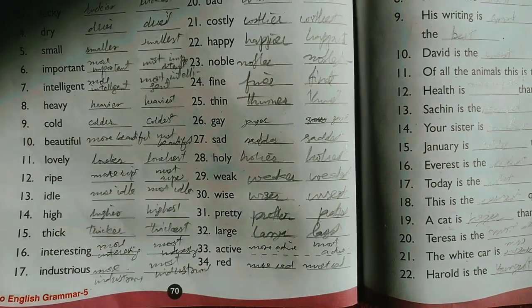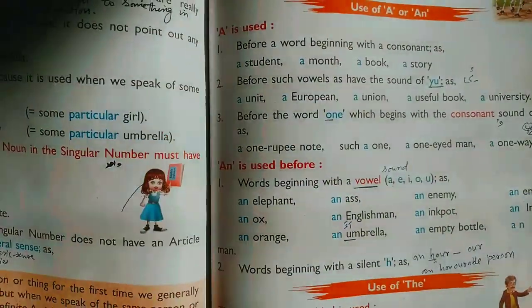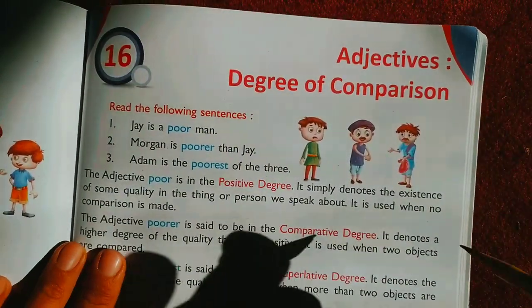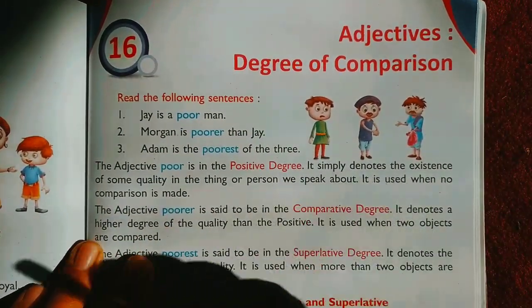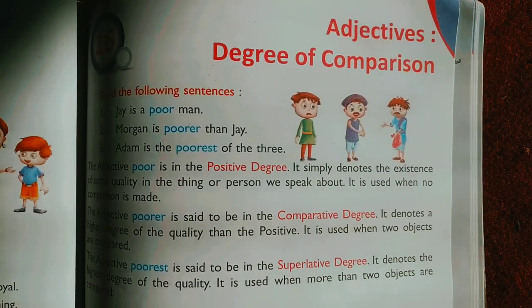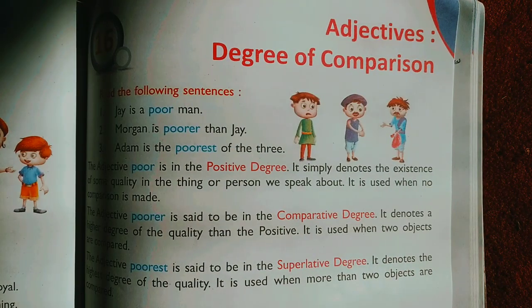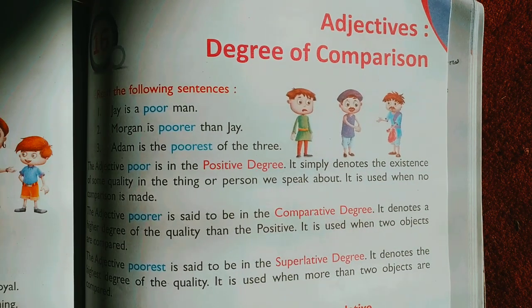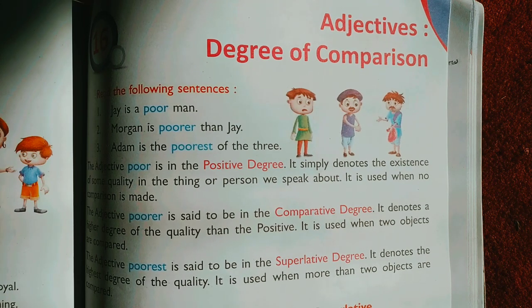So dear students, this is how we completed this topic. I hope you understood adjectives and degrees of comparison — how comparisons are made, what rules to follow, what changes occur, what additions are made, and what exceptions there are. I hope you liked this video. Please share it, subscribe to this channel, and give your views so that future videos can reach you as well. In the next video, we will take up another grammar topic. Wish you all the best and thank you.